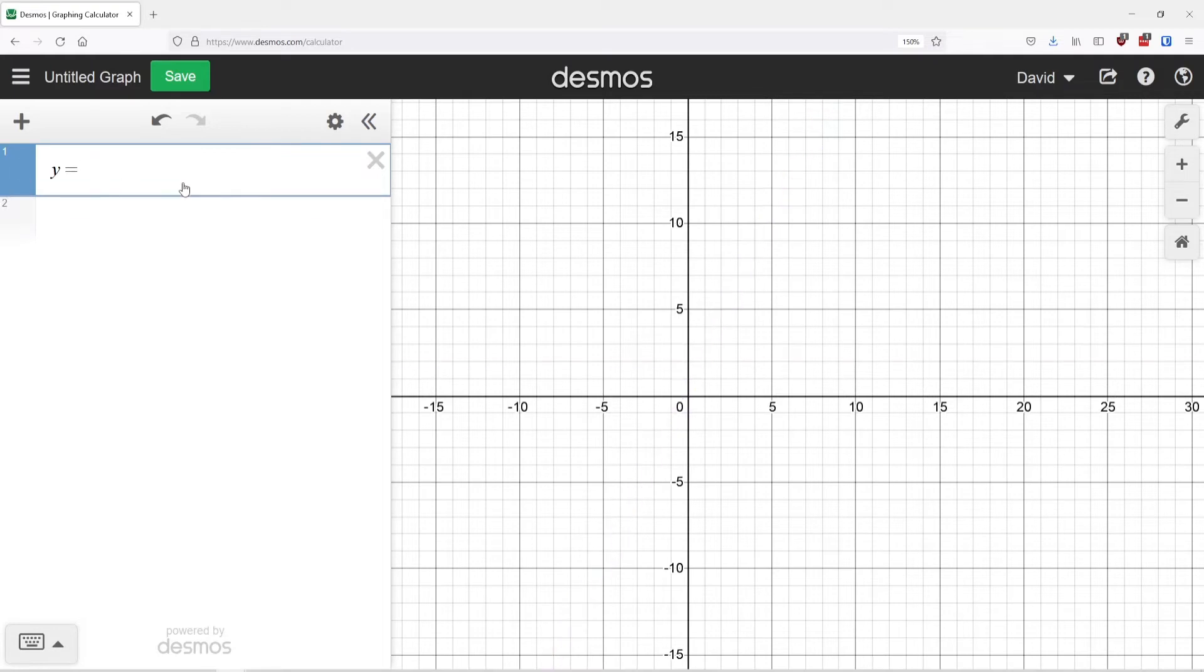I can also customize this. If I want to type in a fraction, I can do 1 slash 2, and you can see it recognizes that as a fraction. Then I use the right arrow to leave the fraction and keep typing.